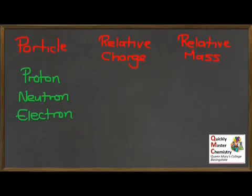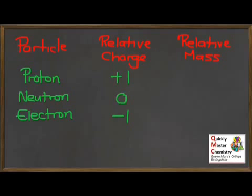For each of those three subatomic particles — the proton, the neutron and the electron — you need to be able to recall from memory the relative charge and the relative mass. You might want to pause the video and see if you can already recall that information. Starting with relative charge: the values are plus 1 for the proton, 0 for the neutron, and minus 1 for the electron. You might be tempted to just describe the proton as positive, the neutron as neutral, and the electron as negative, but you do need to be more specific and give the relative value: plus 1 for the proton, minus 1 for the electron, and 0 for the neutron.